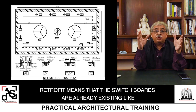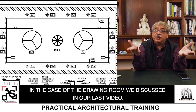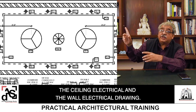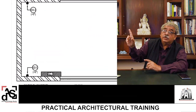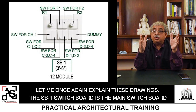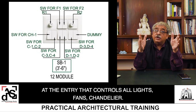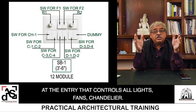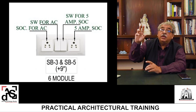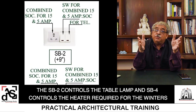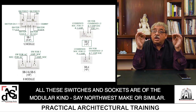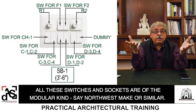Retrofit means that the switchboards are already existing, like in the case of the drawing room we discussed in our last video. Let's show the two drawings of the drawing room again — the ceiling electrical and the wall electrical drawing. The SB1 switch, the main switchboard at the entry, controls all the lights, fans and the chandelier. SB3 and SB5 were controlling the air conditioners. SB2 controls the table lamp and SB4 controls the heater required for the winters. All these switches and sockets are of the modular kind, say Northwest make or any similar make.